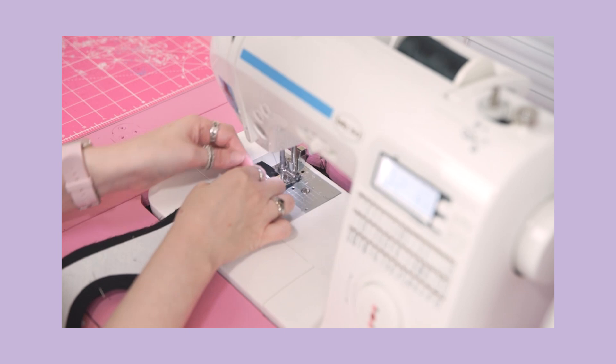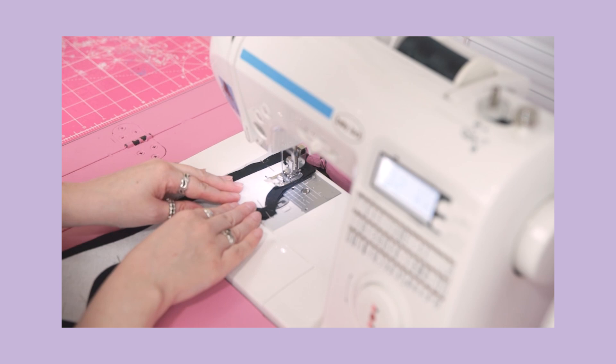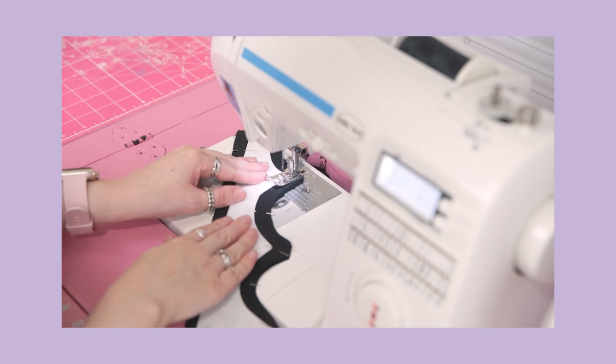Stitch close to the edge of the stabilizer, but do not stitch over it. If you stitch over the interfacing or stabilizer it will make turning your crown inside out an utter nightmare and it won't sit right. Instead just stitch along the edge of it as close as you can.